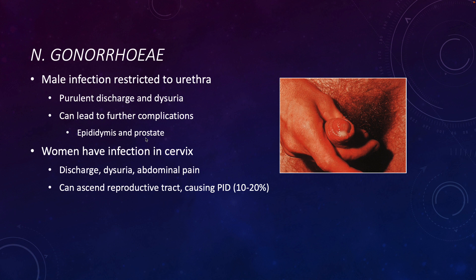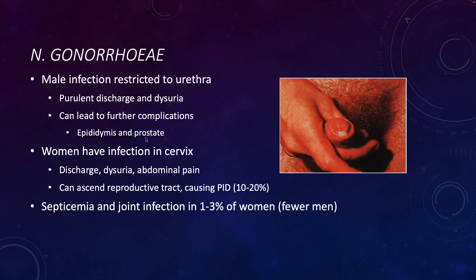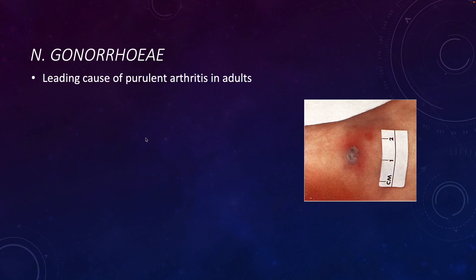The infection can cause pelvic inflammatory disease in 10 to 20 percent of patients, which can lead to scarring in the fallopian tubes and permanent infertility. Infrequently — in 1 to 3 percent of women and even fewer men — the bacterium can leave the reproductive tract or oral cavity and cause septicemia. It can also cause joint infection, and in fact it is the leading cause of purulent arthritis — infection-caused arthritis — in adults.